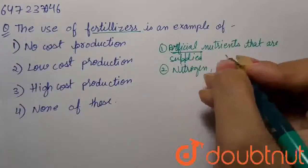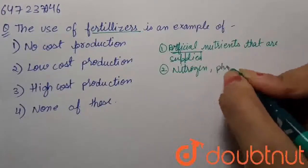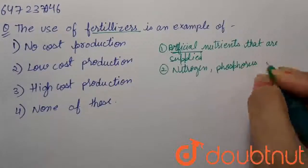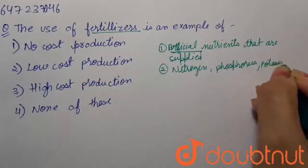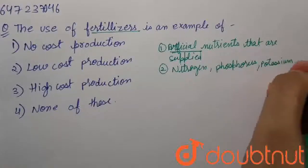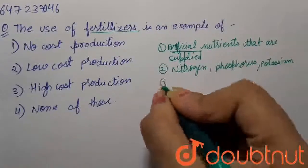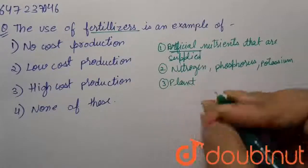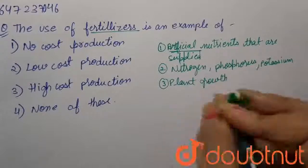Fertilizers are nutrients like nitrogen, phosphorus, and potassium — there are many more, but let's consider these first. Fertilizers help in plant growth and they increase the rate of growth.